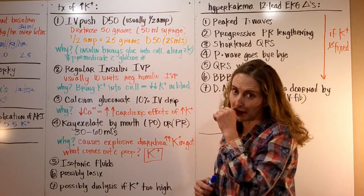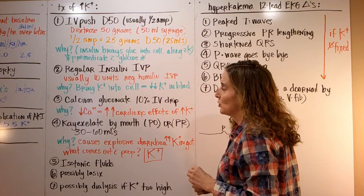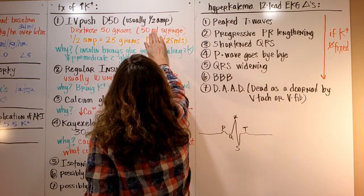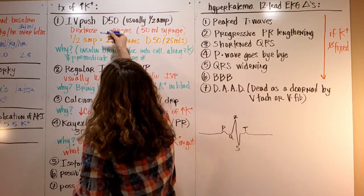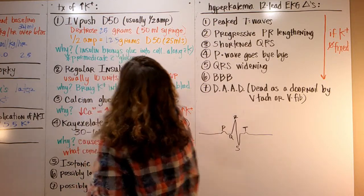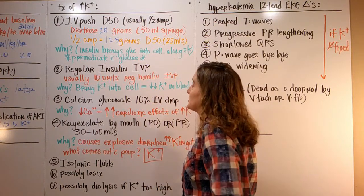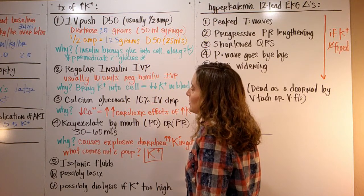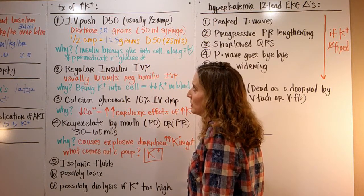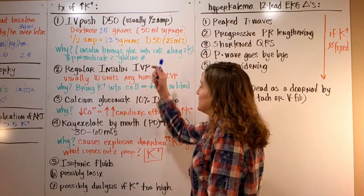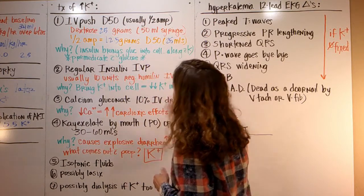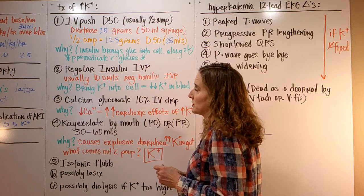The treatment of hyperkalemia: a lot of times initiated in the ER but can be done almost anywhere. Once you find out your patient has high potassium, we have to do some stuff to fix it. We give IV push D50, and it's 25 grams in 50 mils. A half an amp is 12.5 grams. So 50 mils is 25 grams and 25 mils is 12.5 grams.